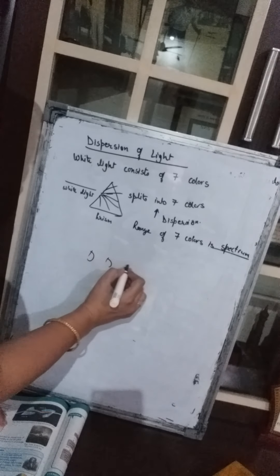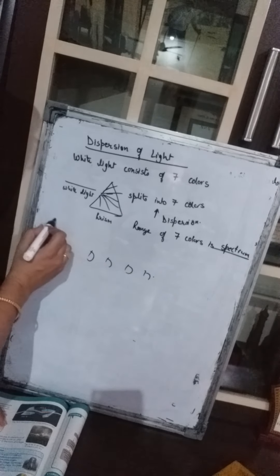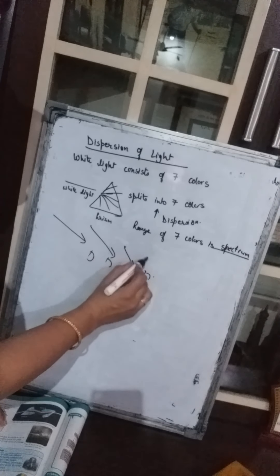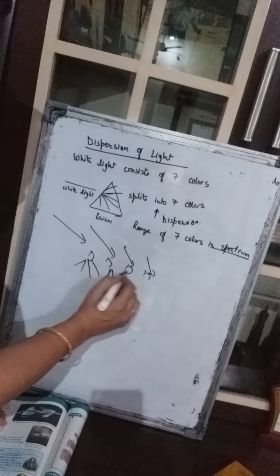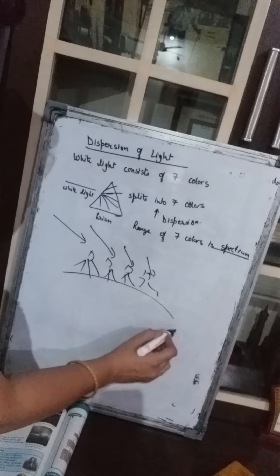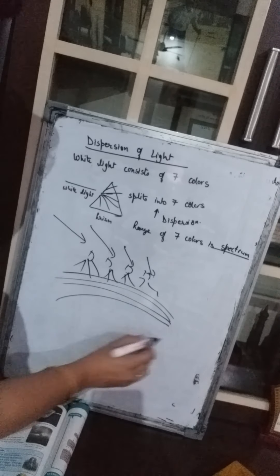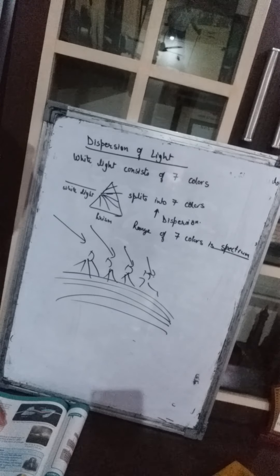This range of seven colors combined together is called the spectrum. In a rainbow, sunlight passes through water droplets remaining in the air after rain — these water droplets act as a prism. When the sunlight passes through these water droplets, it gets dispersed into seven colors, and those seven colors you can see as a rainbow in the sky.